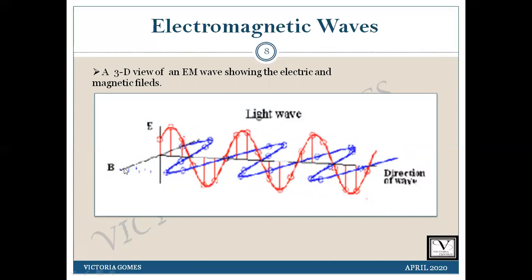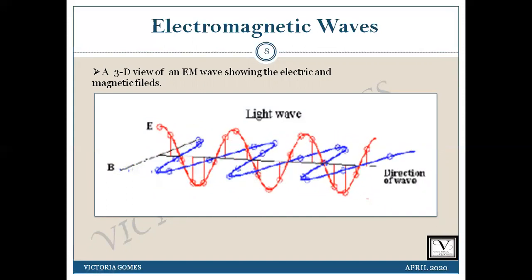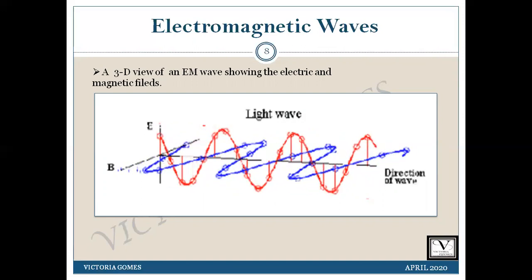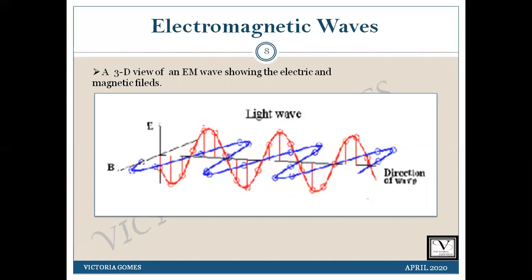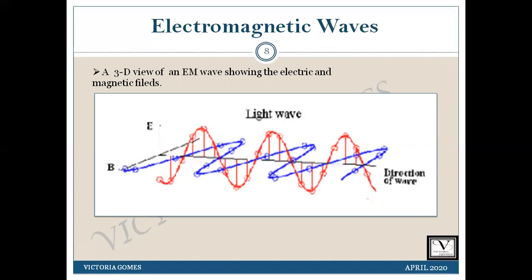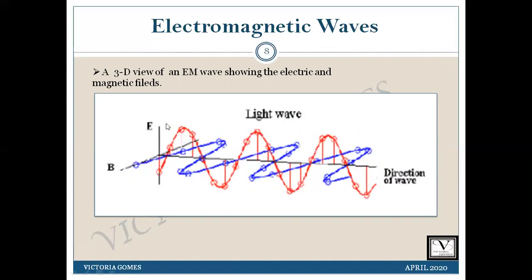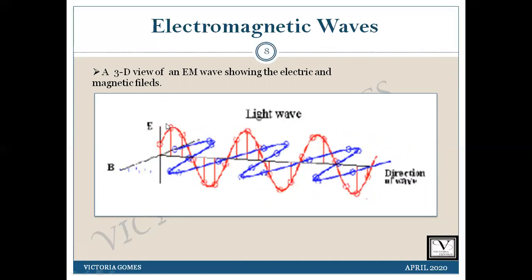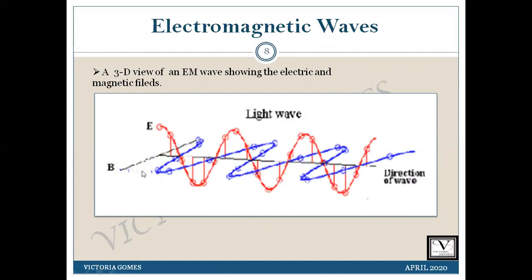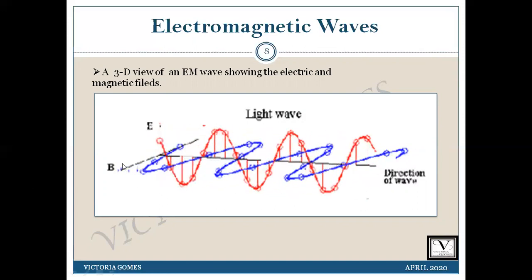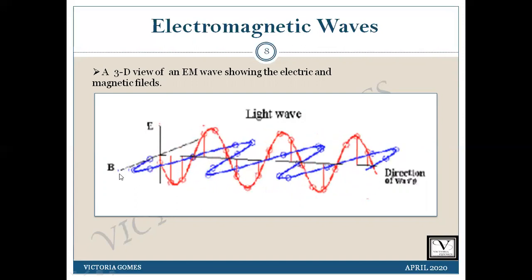Electromagnetic waves are produced by moving electric charges. As you can see in this figure, the electric field is in the vertical plane, that is the XY plane, and the magnetic field is in the horizontal plane, that is the XZ plane.